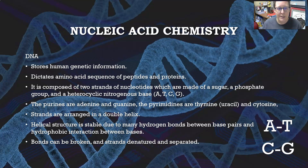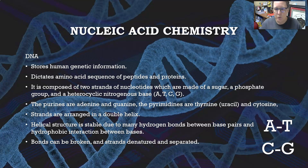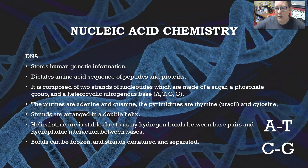As a review: DNA stores human genetic information and will dictate an amino acid sequence of peptides and proteins. DNA also contains a lot of code that is just control code, so only a small percentage of the DNA in our cells are actual recipes for proteins and peptides. DNA is composed of two strands of nucleotides, which are made of a sugar, a phosphate group, and a heterocyclic nitrogenous base — the A, T, C, and G's of your DNA code. The purines are adenine and guanine; the pyrimidines are thymine and cytosine, and also uracil in RNA. Strands are arranged in a double helix.